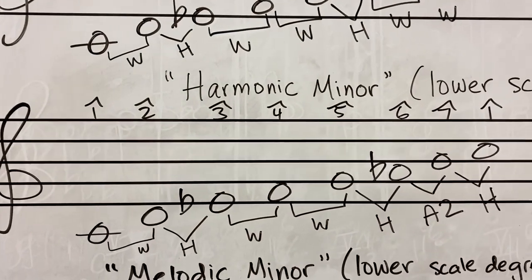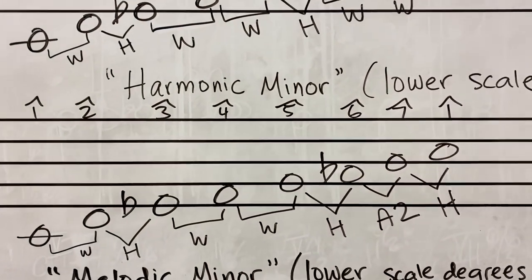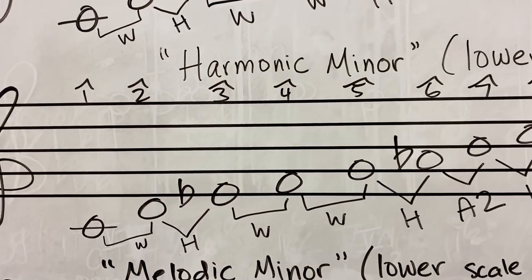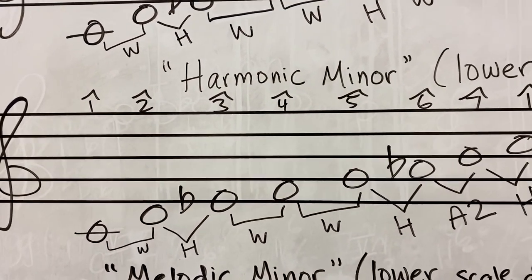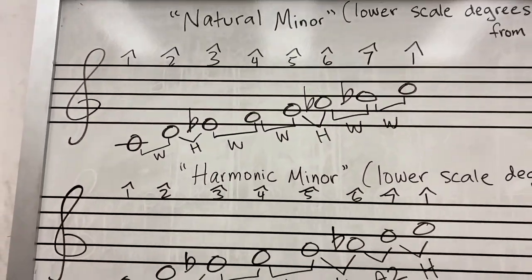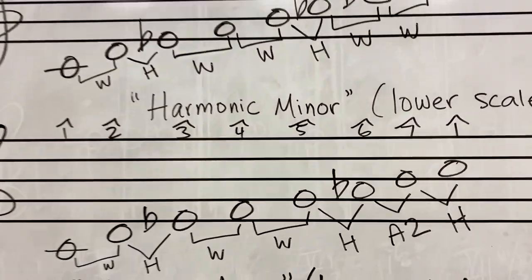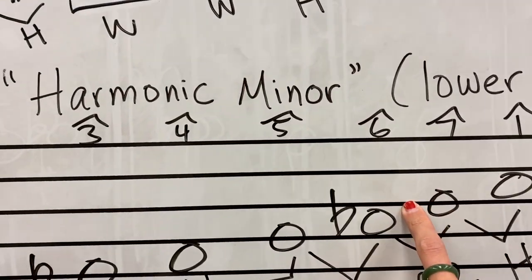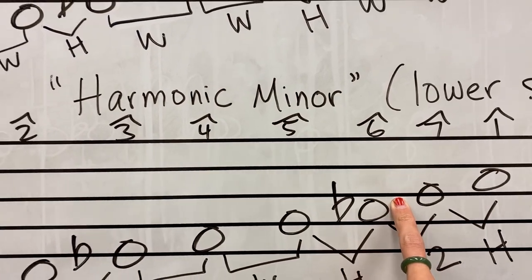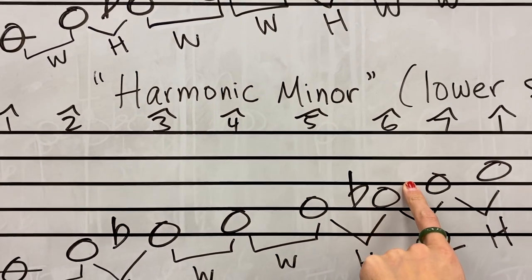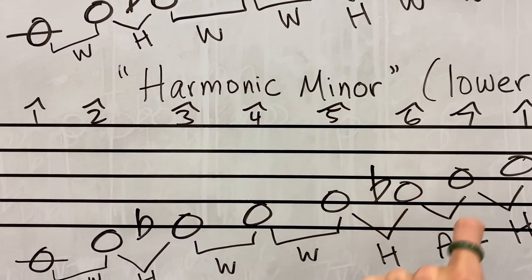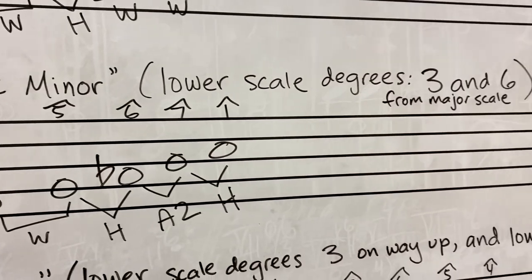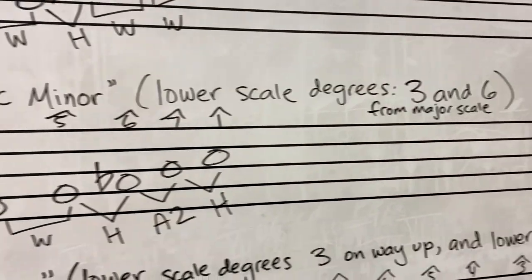The next minor scale I'm going to talk about is the harmonic minor. Harmonic minor has some similarities to the natural minor scale, except the 7th is left natural — kept the same as in the major scale. The only scale degrees that are lowered are 3 and 6.